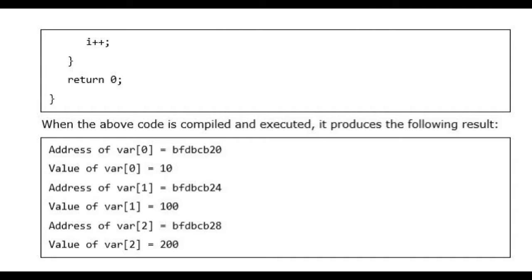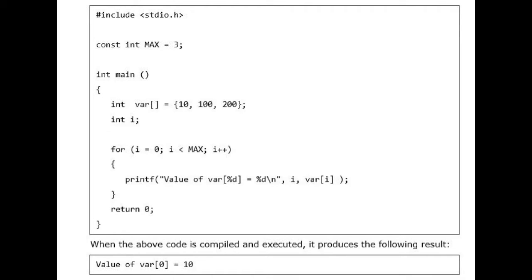When the above code is compiled and executed, it produces the following result. Address of var[0] = bfdbcb20, value of var[0] = 10. Address of var[1] = bfdbcb24, value of var[1] = 100. Address of var[2] = bfdbcb28, value of var[2] = 200.